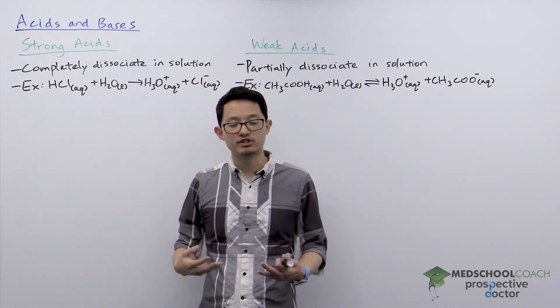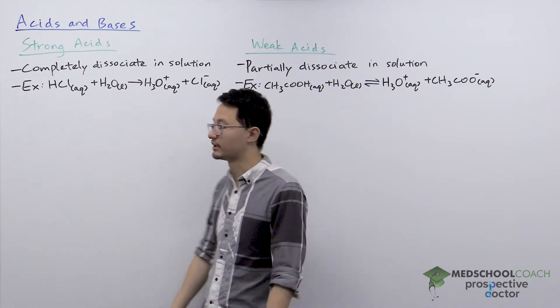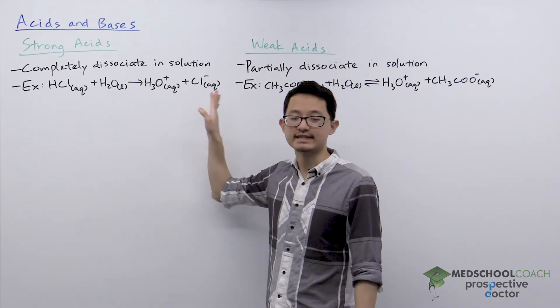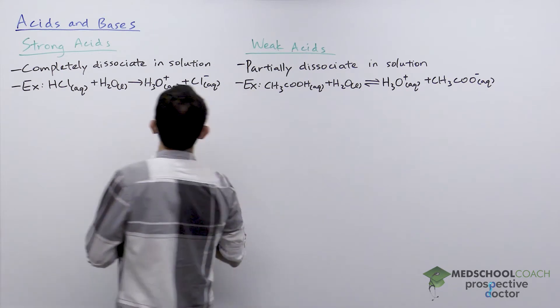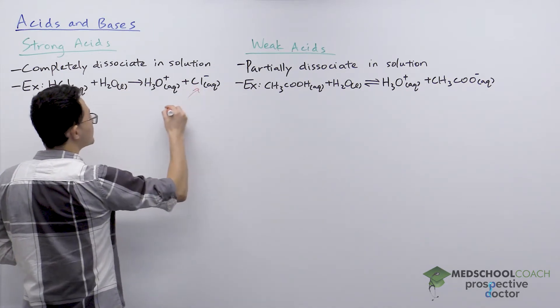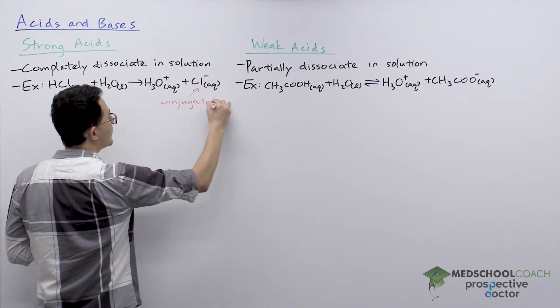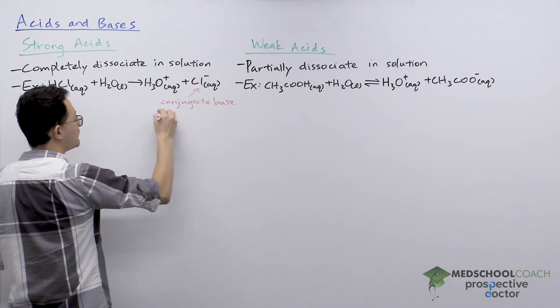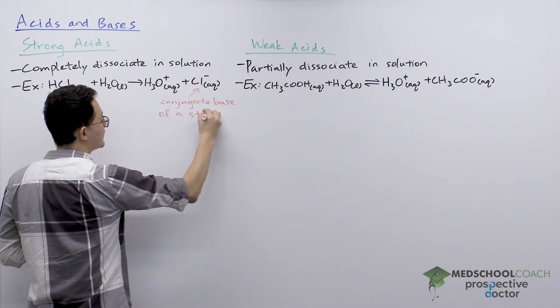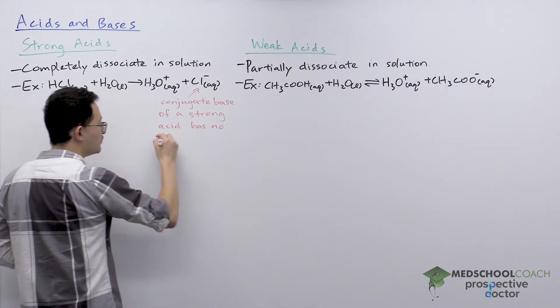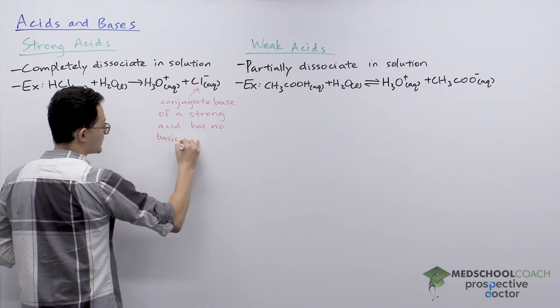Now, the reason why strong acids are able to dissociate completely in solution is because chloride, the conjugate base, is extremely stable. So what we say here is that the conjugate base of a strong acid has no basic properties.